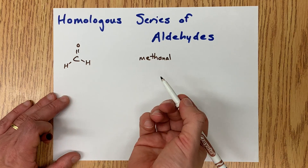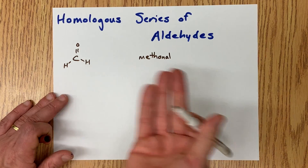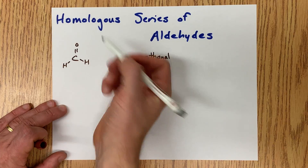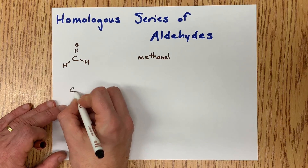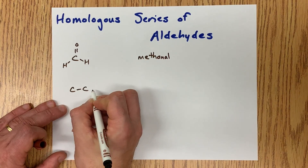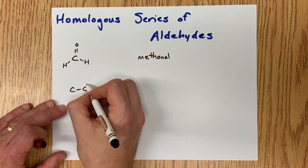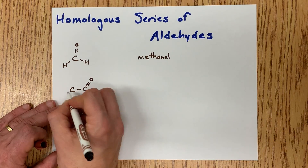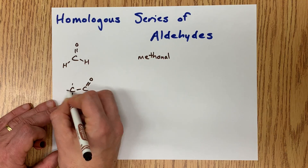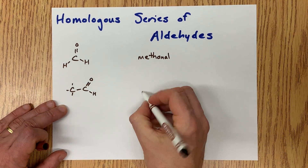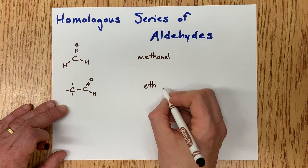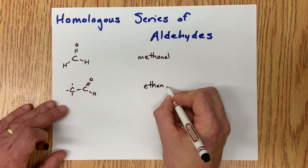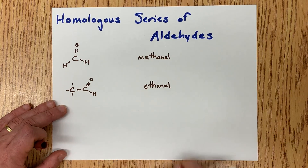Some people call this formaldehyde, but methanal is the official name for it. What makes the next member of the homologous series is to have a two carbon chain. To make it an aldehyde, we still need a double bonded O at the end of the molecule. Don't forget to write in all the extra hydrogens you're going to need. This is a two carbon chain, single bonded together, and aldehyde — ethanal.